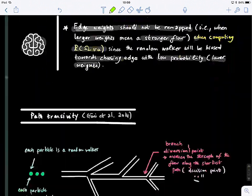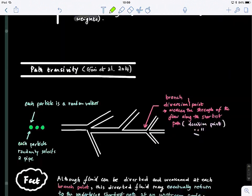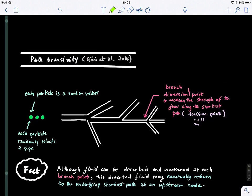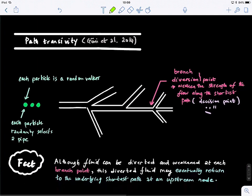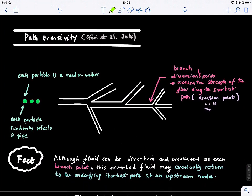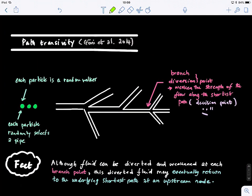The second measure is called path transitivity. This was also proposed by Goni and collaborators in 2014, the same paper.